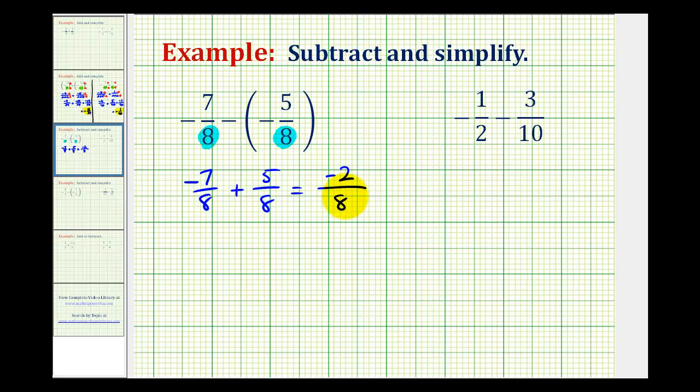But now the numerator and denominator do have a common factor of 2. And to show this, we'll write this as negative 1 times 2. And then we'll write the prime factorization of 8, which would be 2 times 2 times 2. So notice how one factor of 2 is going to simplify out. So we're left with negative 1 all over 4, or negative 1 fourth.